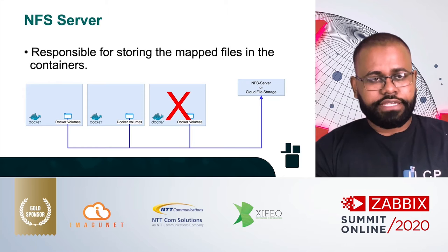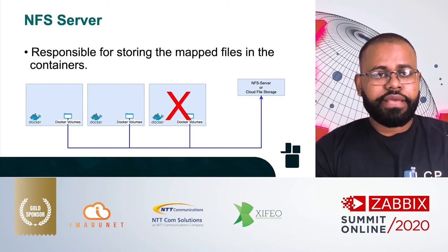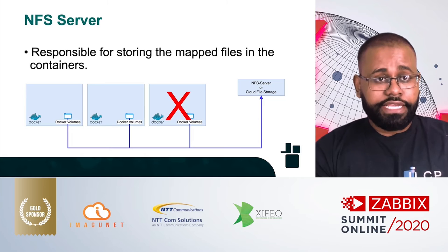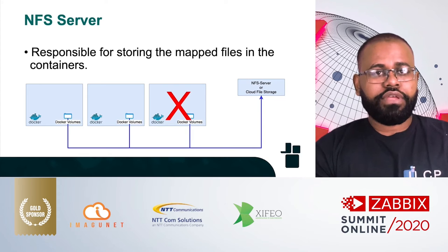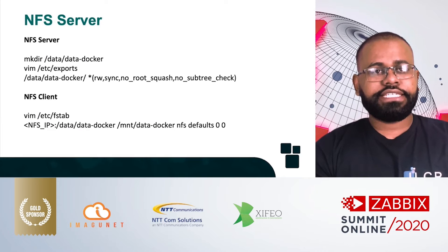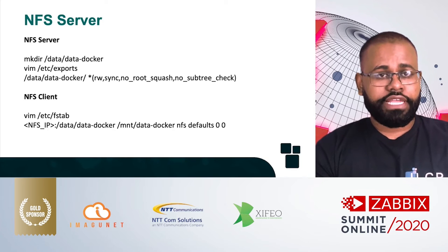Let's talk about NFS. We can use an NFS server or another service such as cloud file storage. This service is responsible for sharing and synchronizing files between the cluster Swarm nodes. It ensures that if any Docker host is unavailable, the others will have a copy of those files. Here are the necessary commands to configure the NFS server and NFS client — after installing the packages, you just need to follow these steps so the NFS can work and share files to clients.